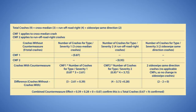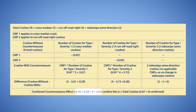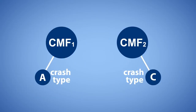Using the five-step process, you would first apply CMF 1 to cross-median crashes. Then apply CMF 2 to run-off-the-road-right crashes. You can assume no change in side-swipe same-direction crashes because these CMFs are not applicable to those crashes. Next, sum the change in crashes across the two crash categories to estimate the combined effect. Finally, check to make sure the estimated crash reduction does not exceed 100%.